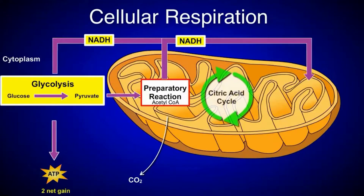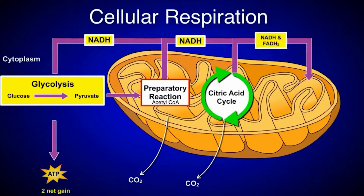In stage three, the citric acid cycle, the remaining carbon from the initial glucose are oxidized, releasing carbon dioxide. NADH and FADH2 are also produced, in addition to two ATP molecules.